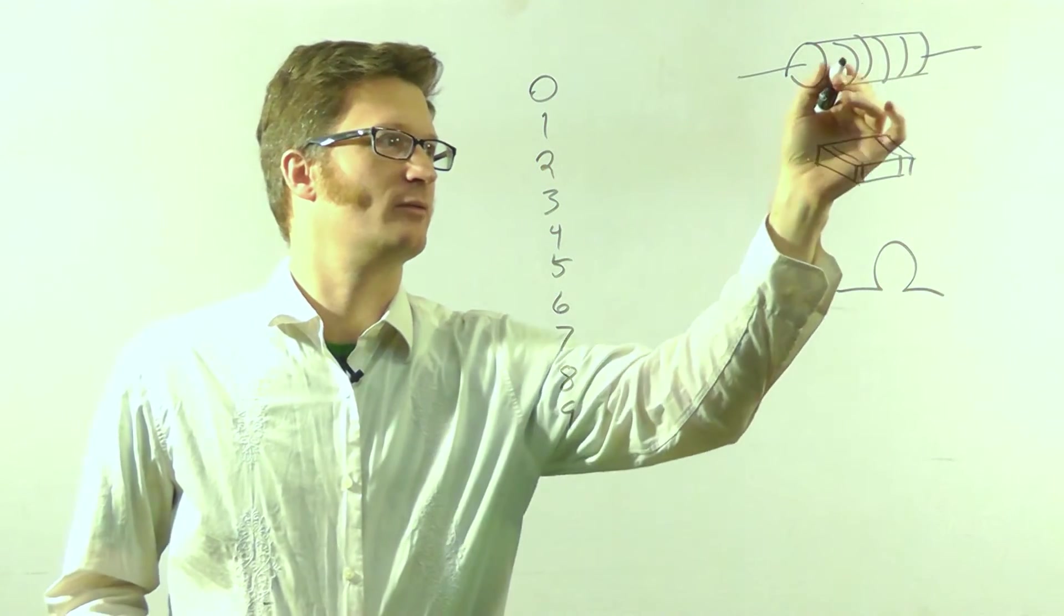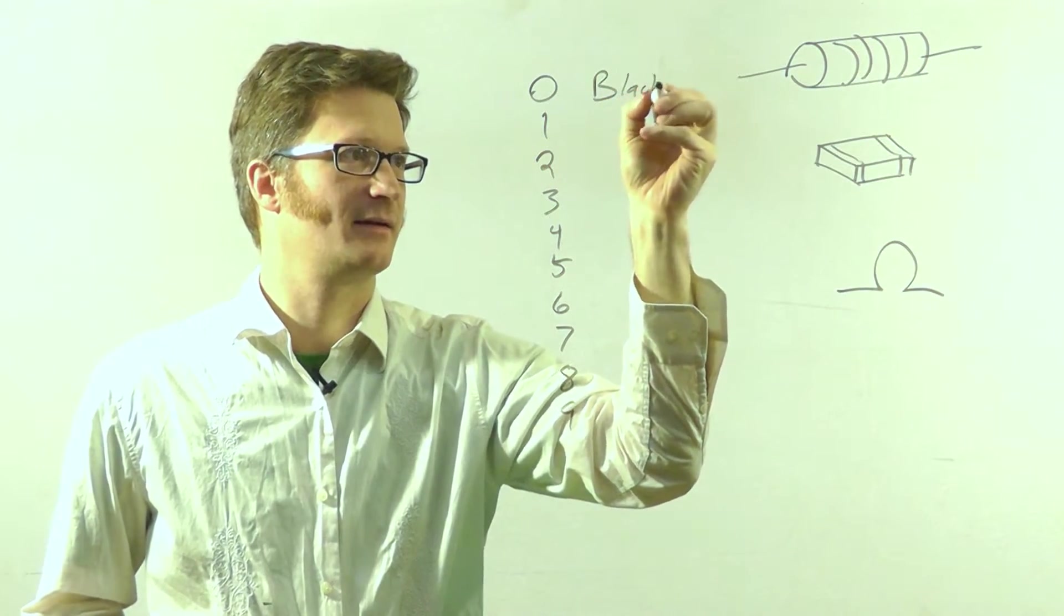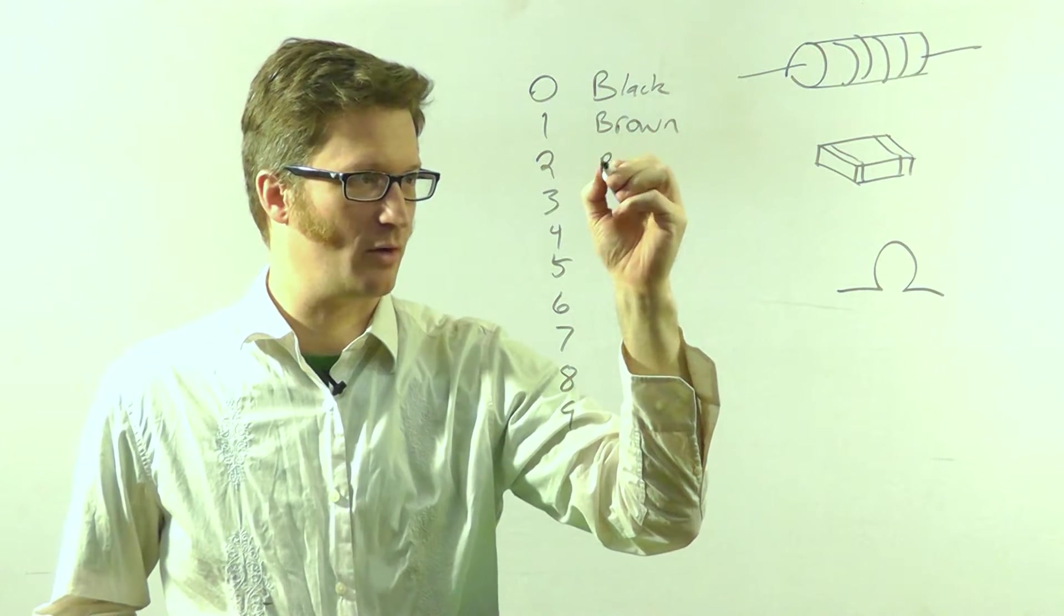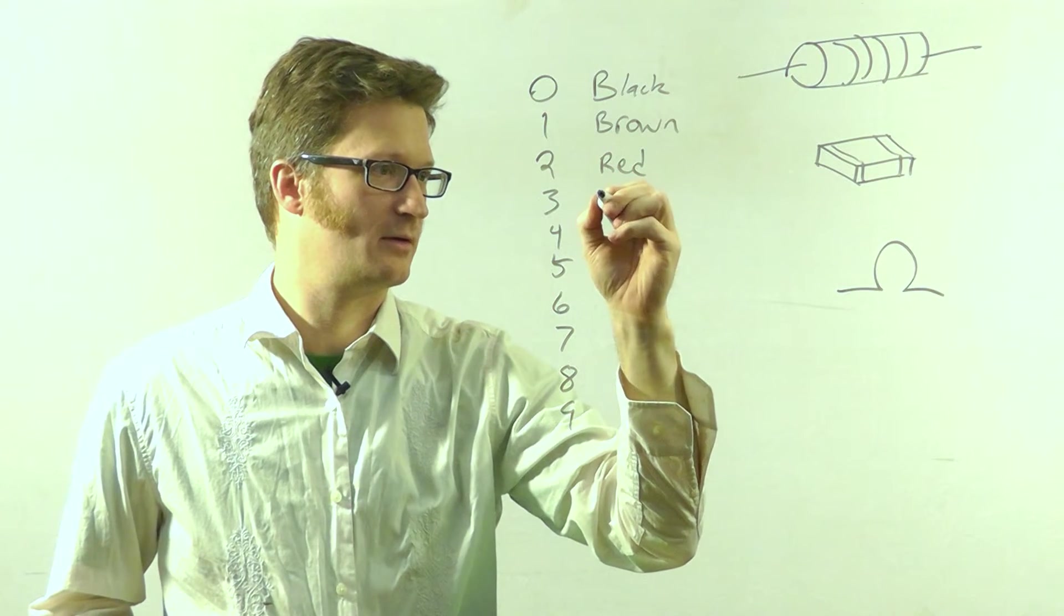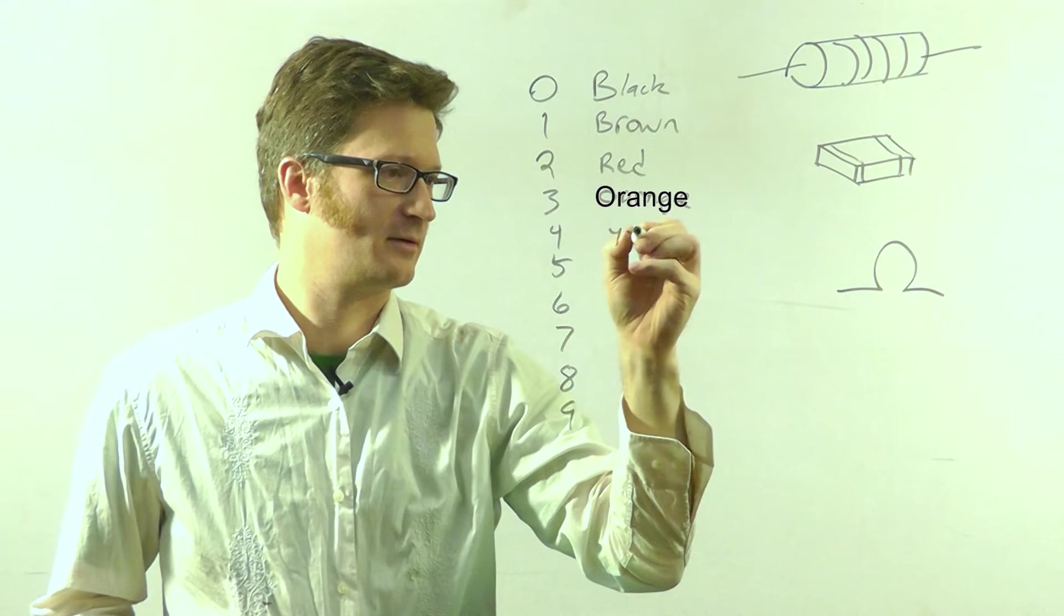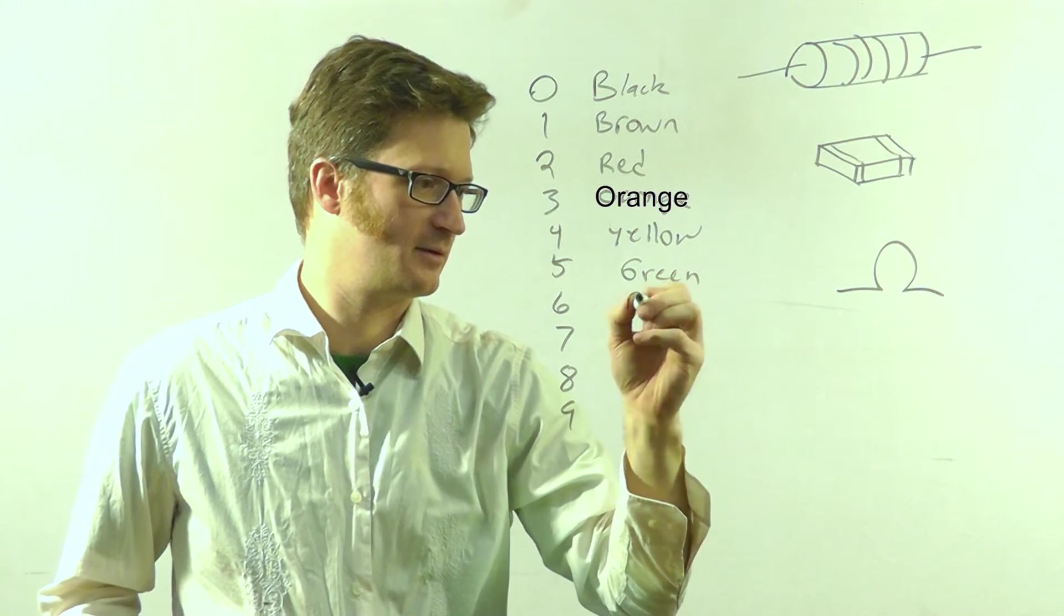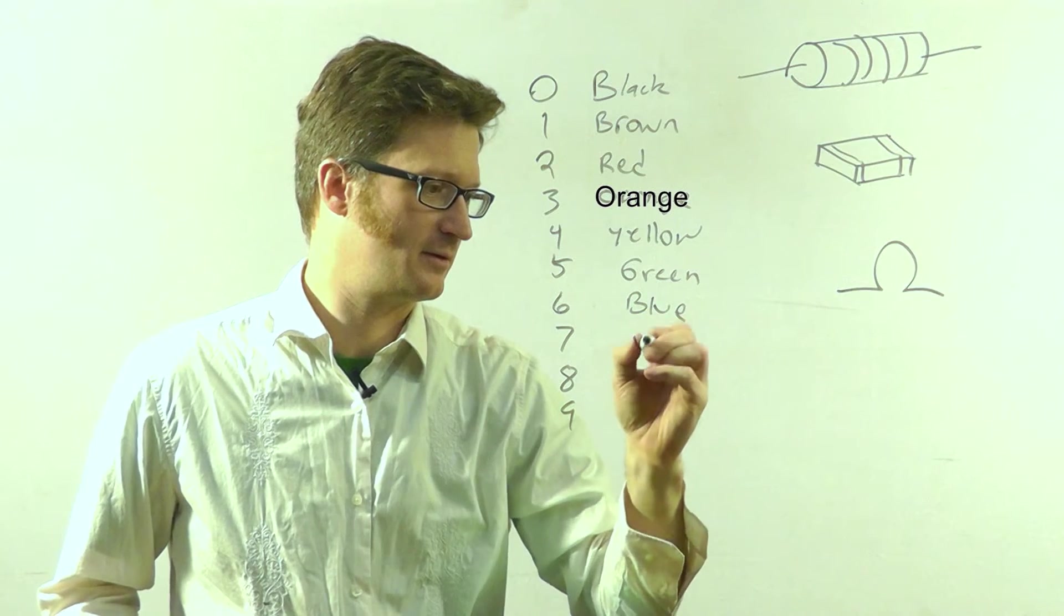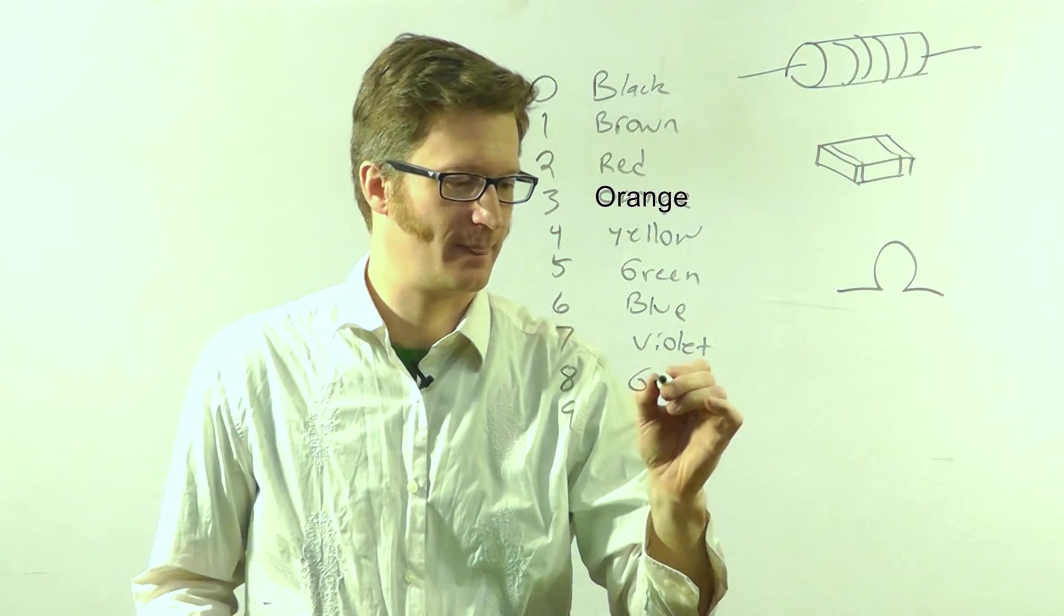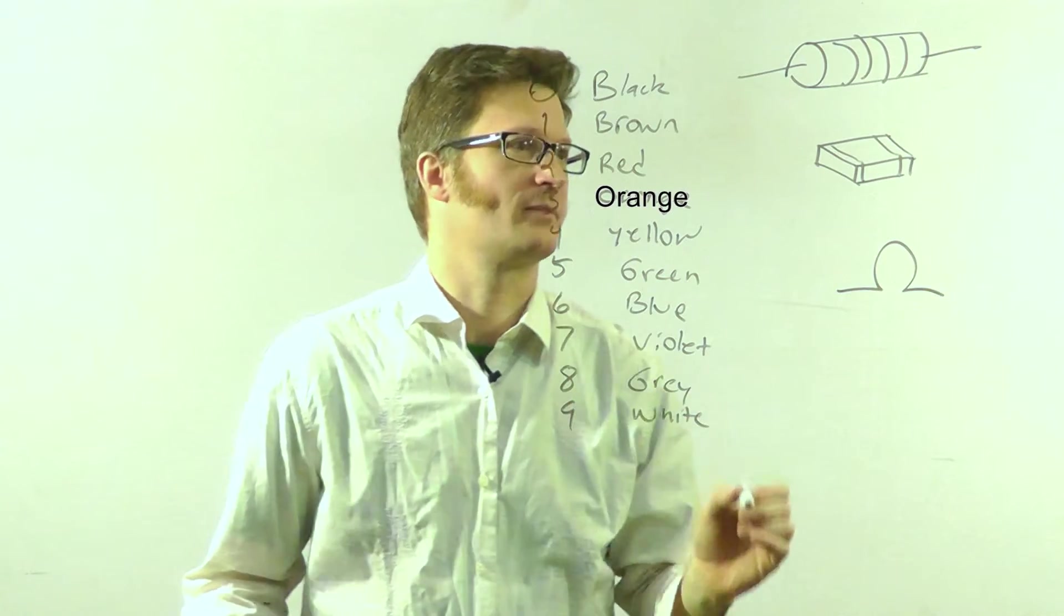Alright, so you read the values like this. Zero is black, one is brown, and then we start going through the rainbow, and then we have grey and white.